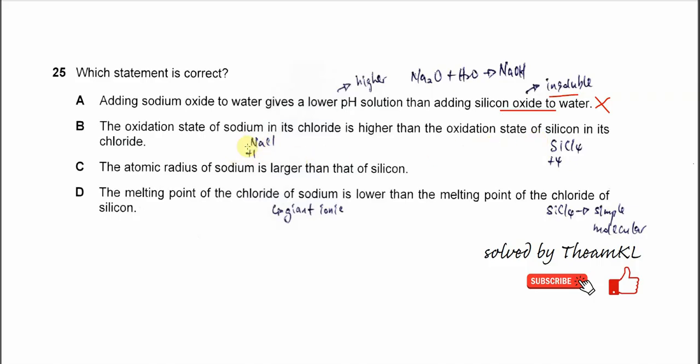In NaCl, the sodium oxidation state is just positive 1. For silicon tetrachloride, the silicon oxidation state is positive 4, which is larger than sodium. So this statement is wrong.